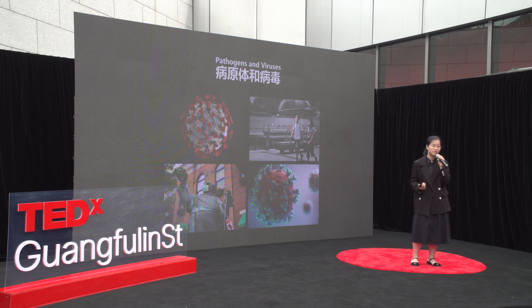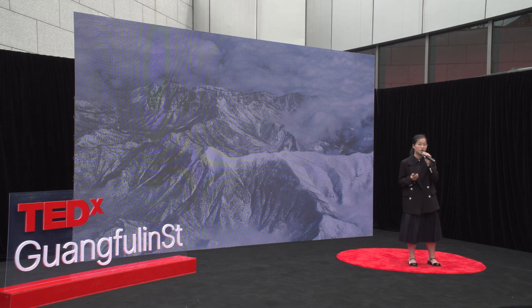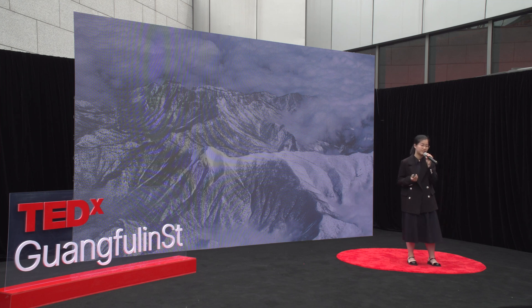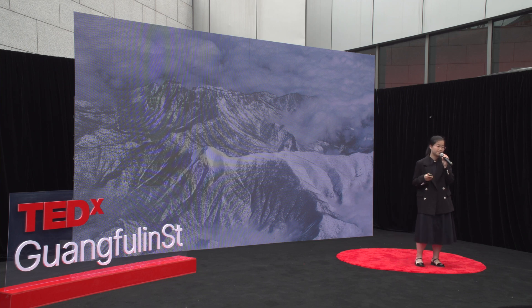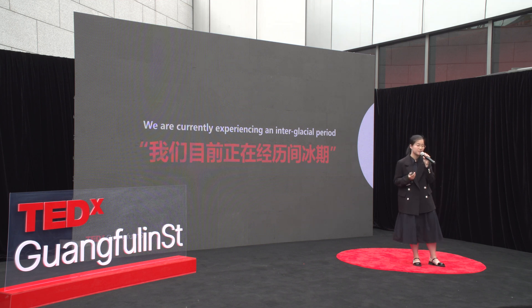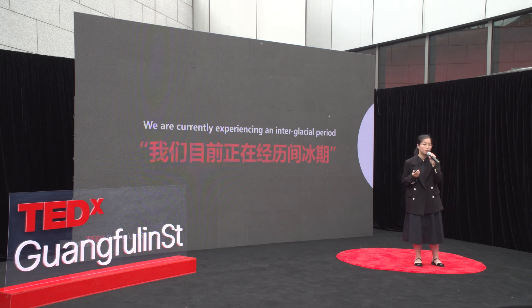Some people argue that global warming is not a problem because it's just a natural precursor to the next ice age. That argument is flawed. While it is true that the Earth has gone through cycles of warming and cooling in the past, the current warming trend is different — it is happening at a much faster rate than ever before, and it is caused by human activity, not natural causes. We are currently experiencing an interglacial period. After about 90,000 years, the ice age will come. However, global warming is causing the opposite effect: the polar ice caps are melting, leading to a rise in sea levels, and the increase in temperature is also causing changes in ocean currents, which can affect weather patterns and lead to more extreme weather events.